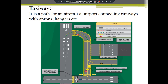Hello everyone, today we will go through the theory of taxiway in airport engineering. A taxiway is a path for an aircraft at an airport connecting the runway with the apron, hangers, etc. When a flight has to move to an apron, hanger, or terminal building, it uses this interconnecting path called a taxiway. Taxiways are marked with yellow color and runways are marked with white color, as shown in this diagram.